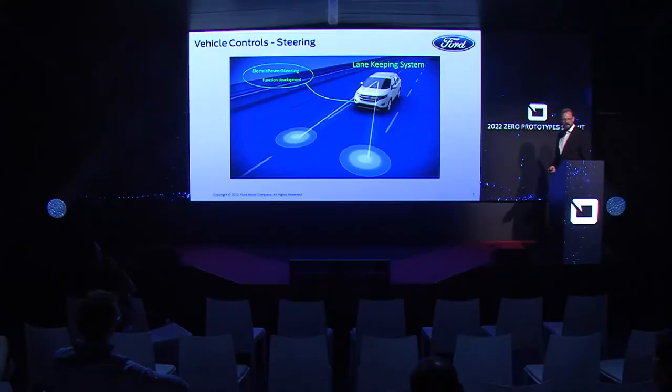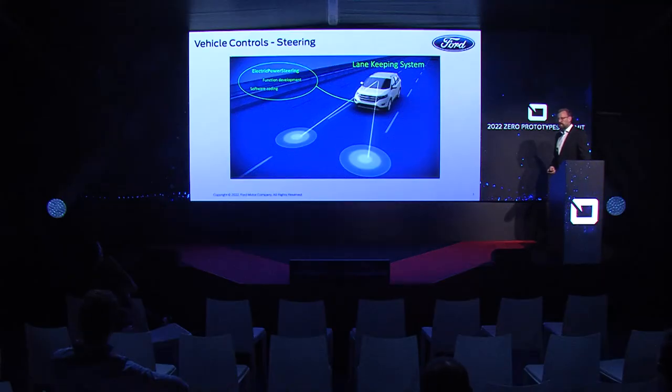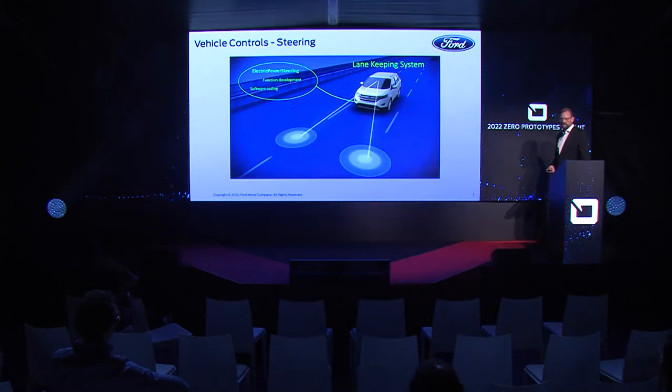I would like to take you through this presentation on the example of a lane keeping system. That's our other part — we enable the ADAS features with the respective steering functions. But next to the function development of those features, we also do the software coding in our team. We start with Simulink and adapt that to C code, which is compiled in our team and sent as an object to the supplier who integrates the functions. This keeps our IP in-house and additionally allows us to reuse the functions vehicle line after vehicle line, to have everywhere the same code.